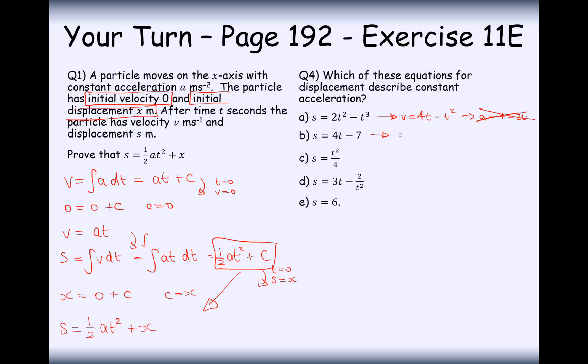Is this one here? Well, V is equal to 4. So therefore, A is equal to 0. Is that constant acceleration? No, really, it's no acceleration. That's what it is. This one here, V is equal to 1 half T. And differentiate that again, and we get a half. Is that constant acceleration? Yes, it is. It's always accelerating by a half or 0.5 meters per second squared.